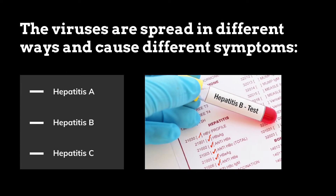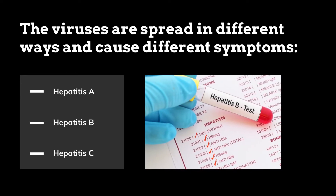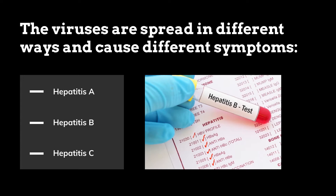Hepatitis B is spread through contact with infected blood, semen, or other bodily fluids. Some people recover quickly from a Hepatitis B infection. For others, the virus can cause long-term, chronic liver disease.